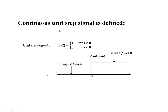Next is the continuous unit step signal. As the name tells you, it takes a staircase waveform or a step. The unit step signal is defined only for positive values of t, and for negative values of t the value is 0. The mathematical representation is u(t), which takes the value 1 for t ≥ 0 and 0 for t < 0.